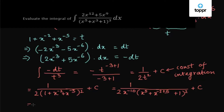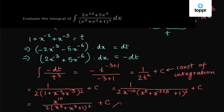So finally we get the answer to be x to the power 10 upon 2 into x to the power minus 5 plus x to the power minus 3 plus 1, whole square, plus c.